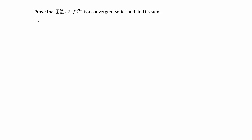In this video I'm going to do this short real analysis proof. It says prove that the infinite sum of 7 to the n over 2 to the 3n is a convergent series and find its sum. We're given a series or infinite sum and we're also told that it's convergent but we have to prove that, and once we're done proving that we also have to find the sum of this infinite series.